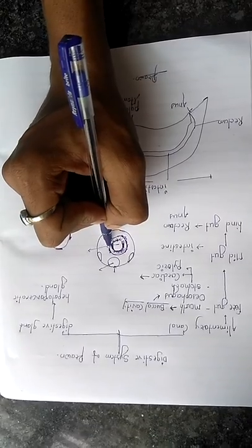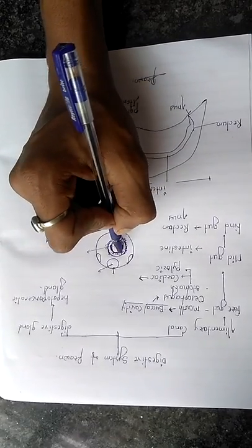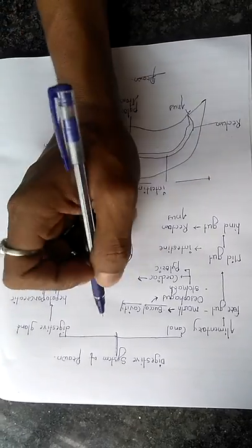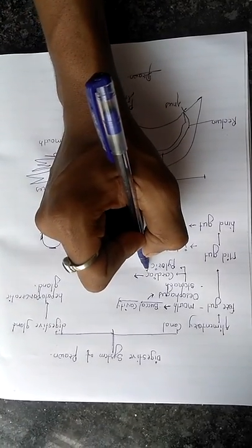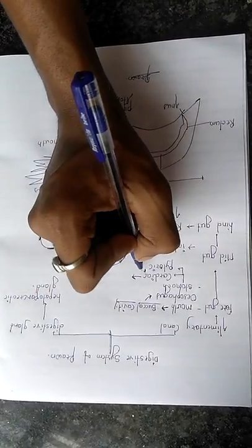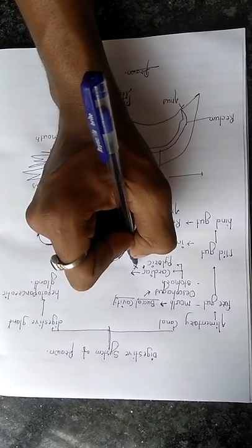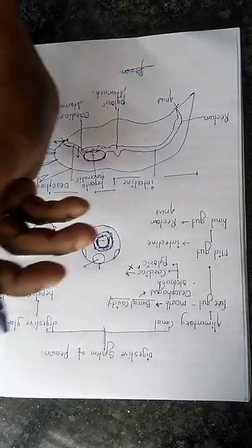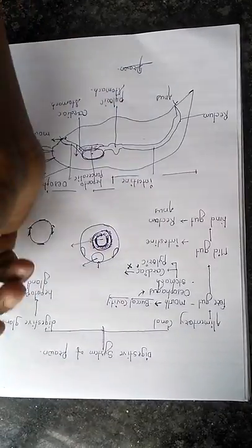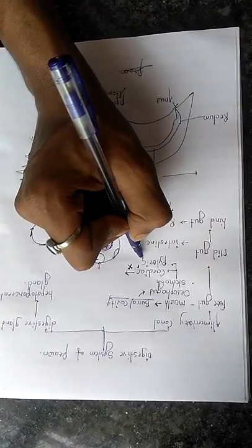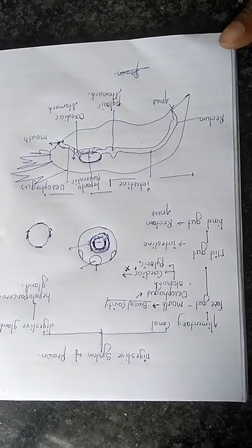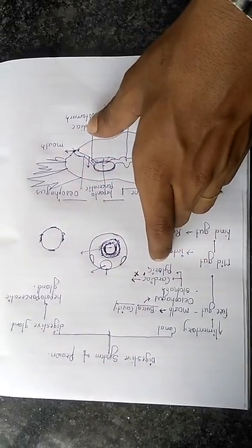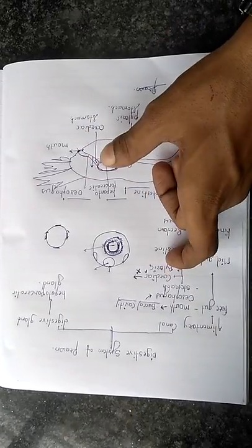Between the cardiac stomach and pyloric stomach, a sphincter valve is present that prevents food from going back. The pyloric stomach is smaller than the cardiac stomach.